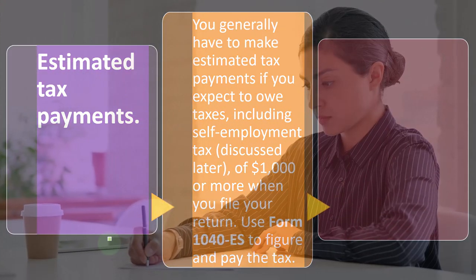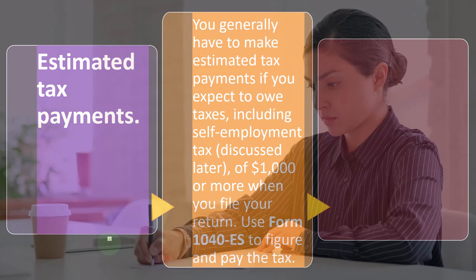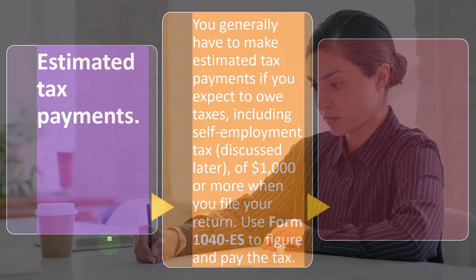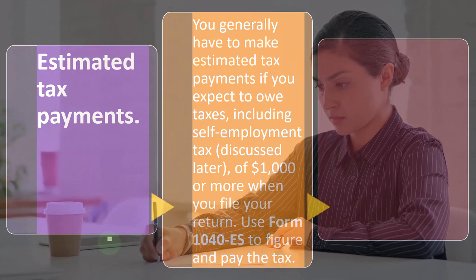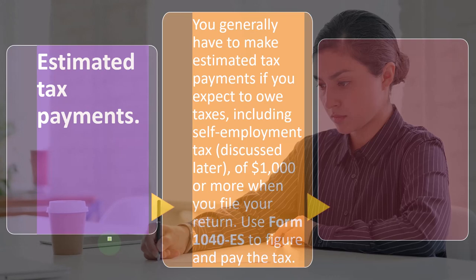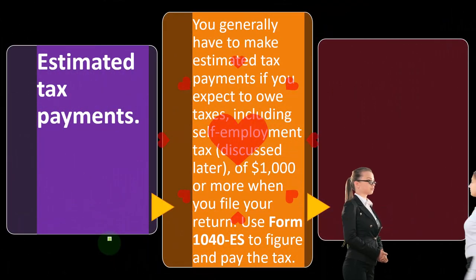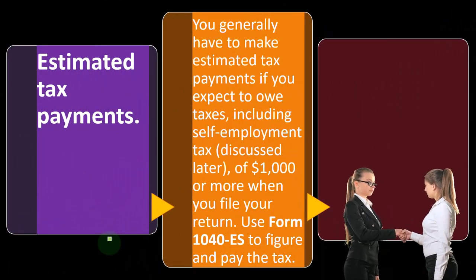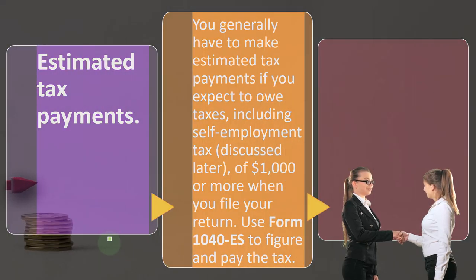If you don't make estimated tax payments across the four quarters throughout the year, the IRS will hit you with penalties and interest — what I call their sticks. Your goal for taxes is to pay as little as possible and as late as possible from a cash management standpoint. But if you don't pay quarterly, you'll end up paying more money anyway because of penalties and interest on top of the tax owed.